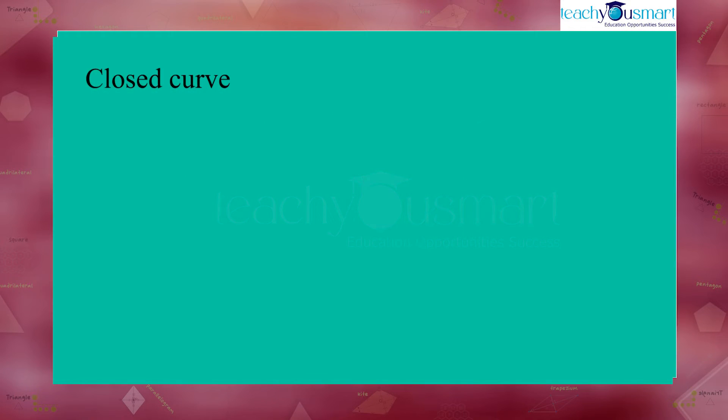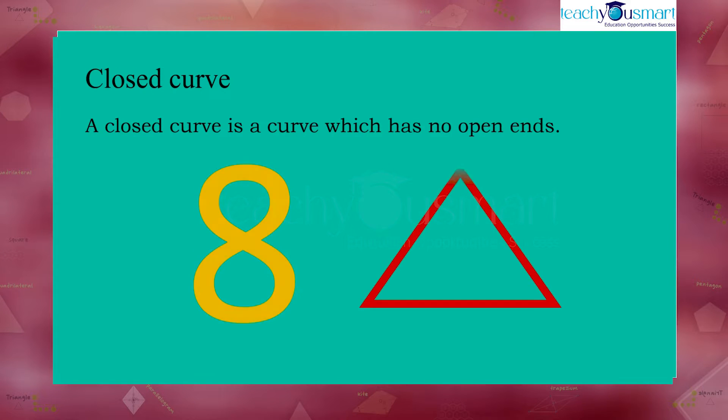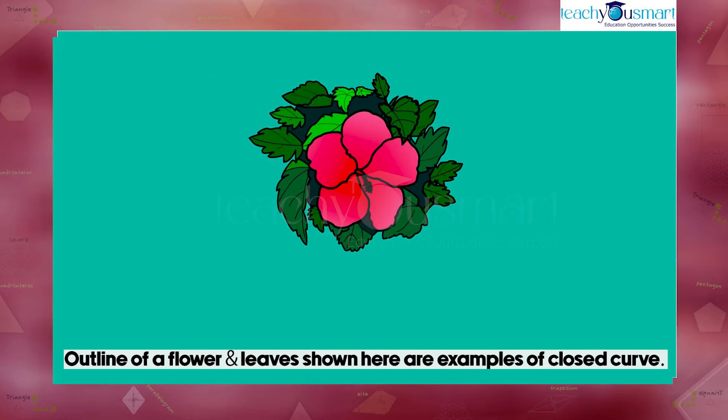So what does a closed curve mean? A closed curve has no open ends. The outline of a flower and its leaf are examples of closed curves.